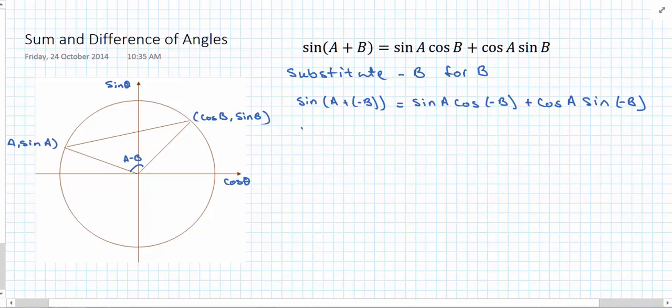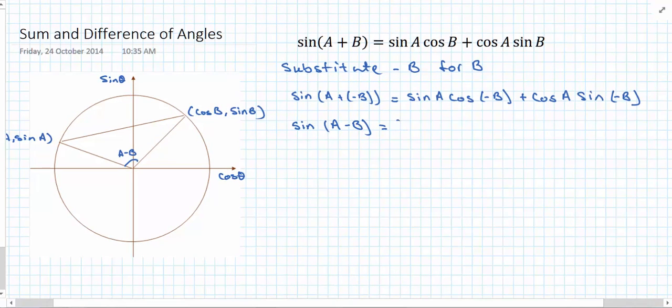On the left hand side, sine of a plus negative b is the same as sine of a minus b. Now cos of negative b, again as we said in an earlier video, cos is an even function. So cos of negative b is the same as cos of b. That gives me sine a cos b.